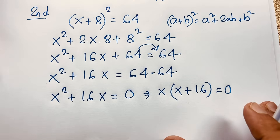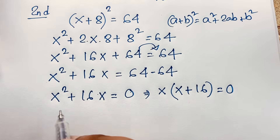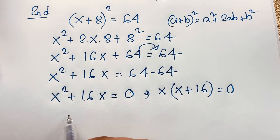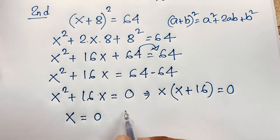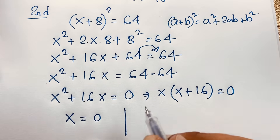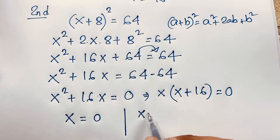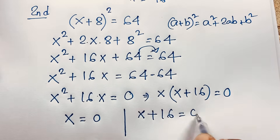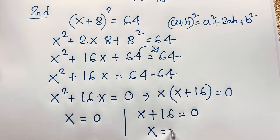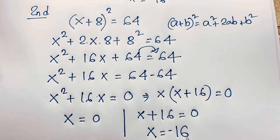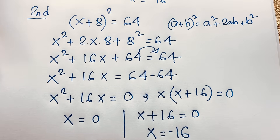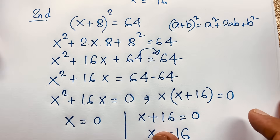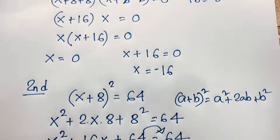So we are finding two cases. Our first case: x = 0. And the other case: x + 16 = 0, so x = −16. Our final solution is x = 0 and x = −16.